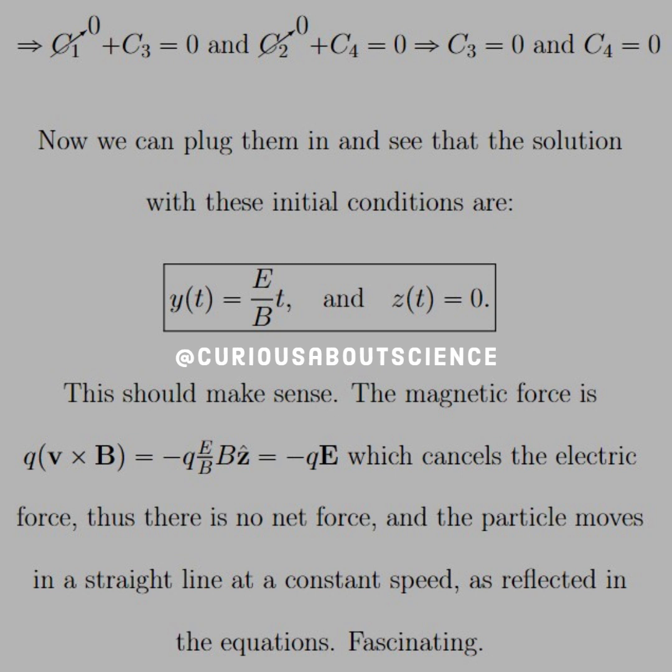This simply shows that the electric force cancels with the magnetic force, thus there is no net force, and that shows that the particle moves in a straight line, looking from the force perspective. At a constant speed, and that's what's reflected in the equations.